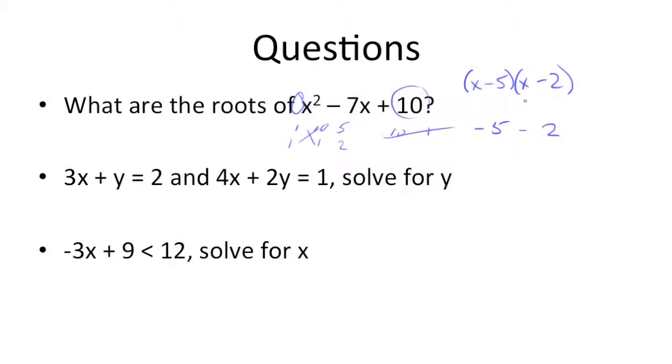So the factors here would be x minus 5 and x minus 2, and to get the roots, we set that equal to 0. We know x has to be 5 here, and x here has to be 2. So those are the roots.